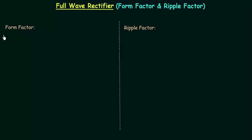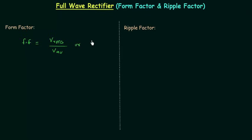In this presentation we will find out the form factor and ripple factor of a full wave rectifier. Form factor gives information about the waveform and it is equal to the ratio of RMS load voltage V_rms to the average load voltage V_average. We can also calculate form factor as I_rms divided by I_average.